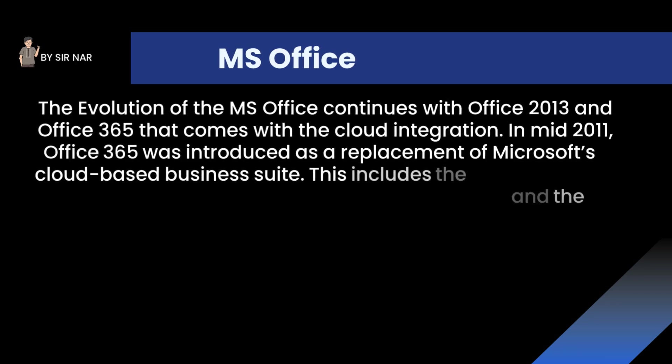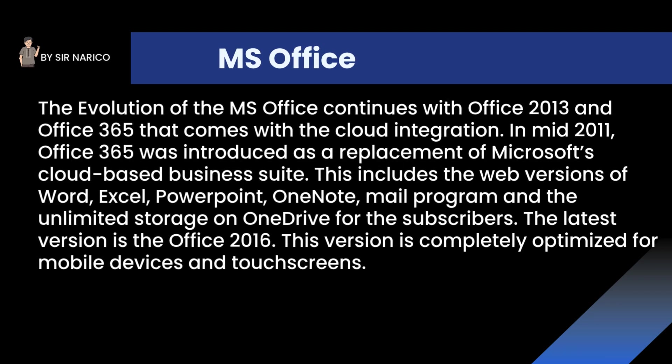Microsoft Office has a long and rich history, evolving from a simple bundle of applications to a comprehensive suite of productivity tools and services. The evolution continued with Office 2013 and Office 365, which came with cloud integration. In mid-2011, Office 365 was introduced as a replacement of Microsoft's cloud-based business suite, including web versions of Word, Excel, PowerPoint, OneNote, a mail program, and unlimited storage on OneDrive for subscribers. The latest version is Office 2016, completely optimized for mobile devices and touchscreens.